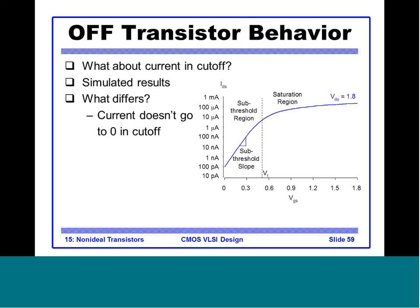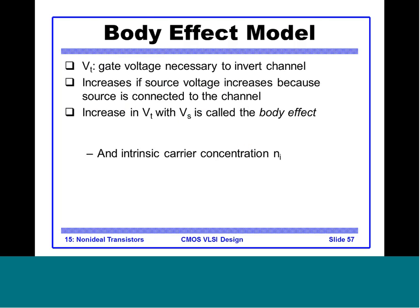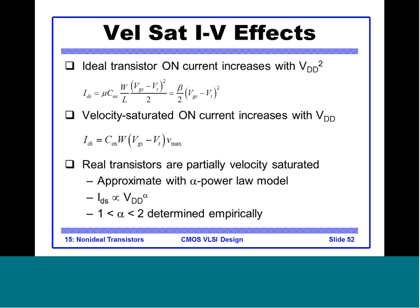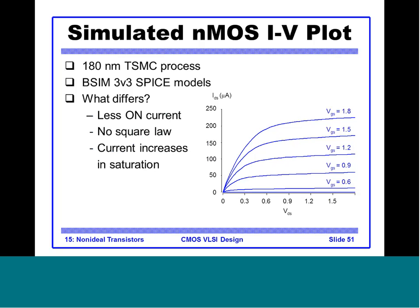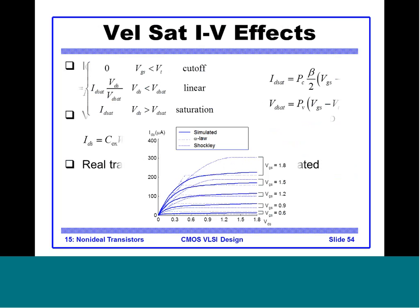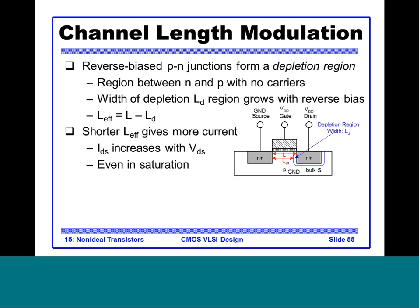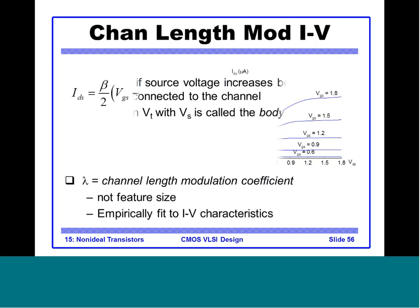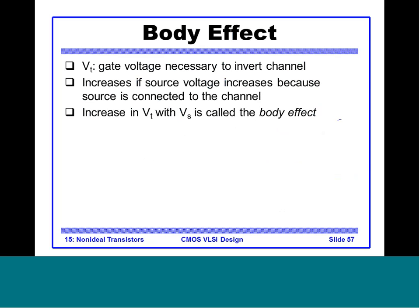To recap the three non-ideal effects: first, velocity saturation — carrier velocity saturates, resulting in lower on-current compared to the ideal model. Second, channel length modulation — current continues to increase in saturation with increasing VDS. Third, body effect — results in an increased VT, which in turn reduces current.